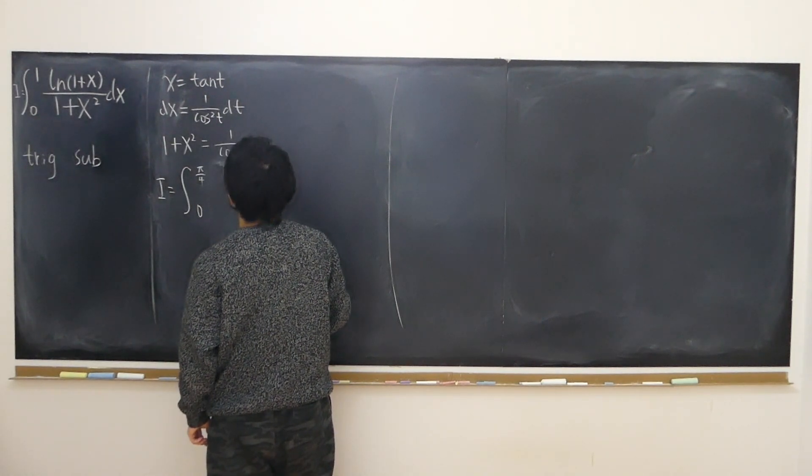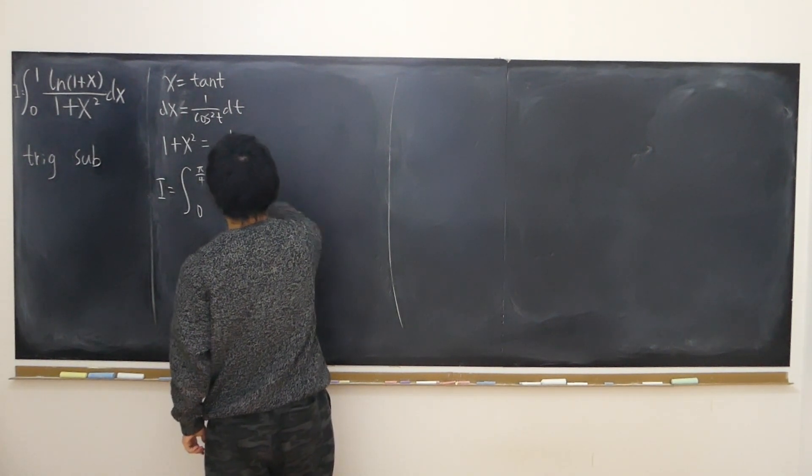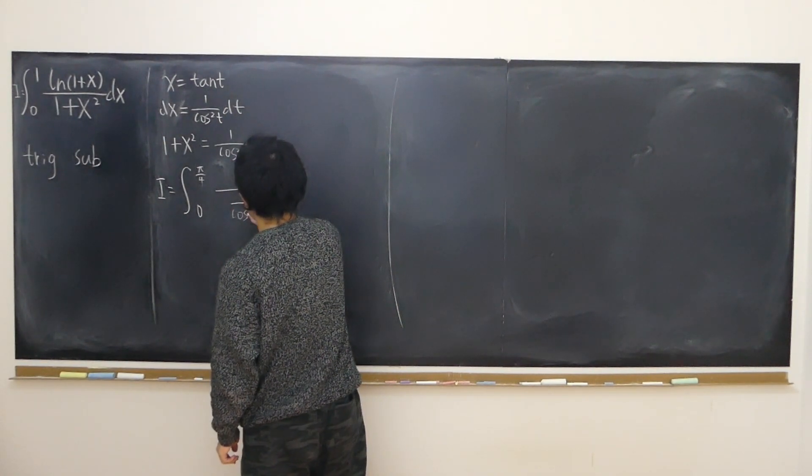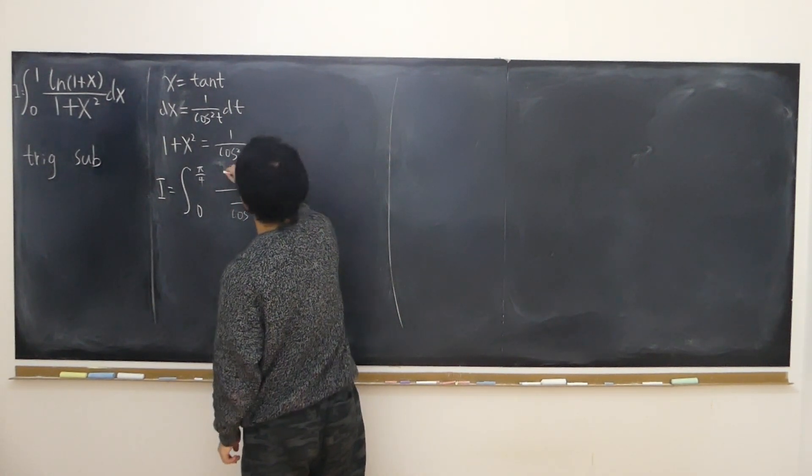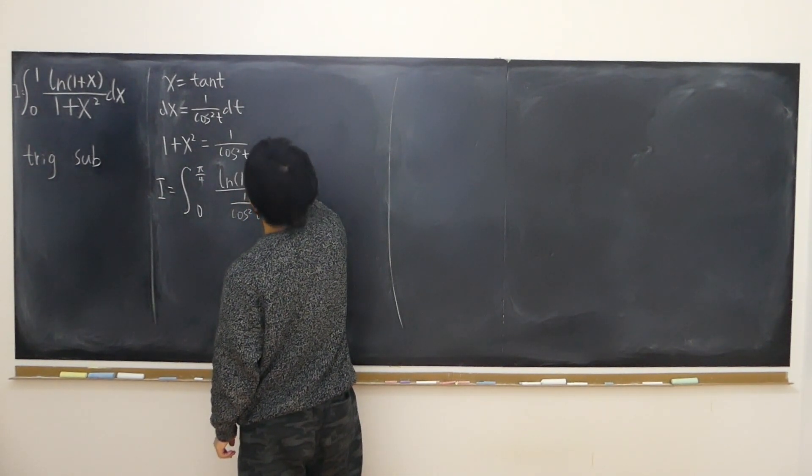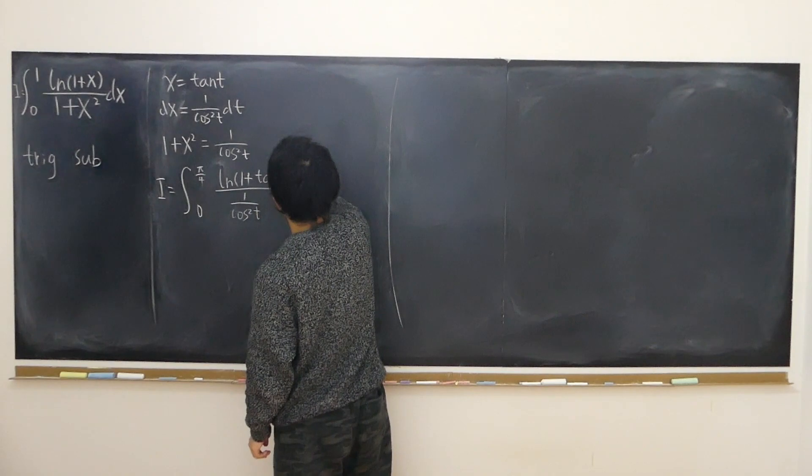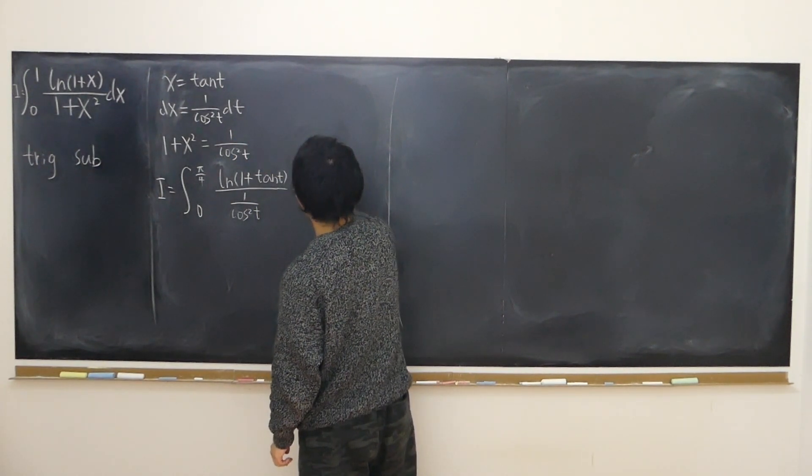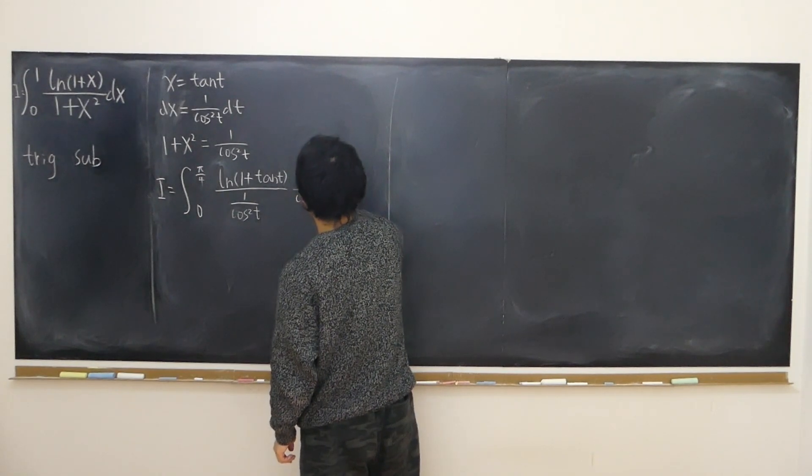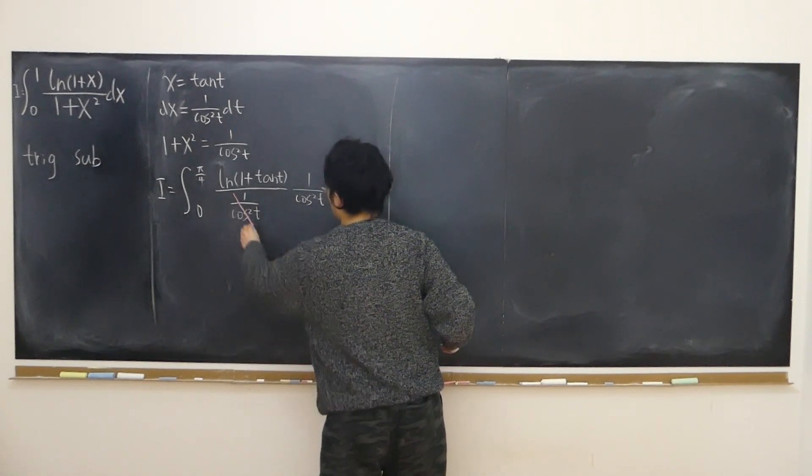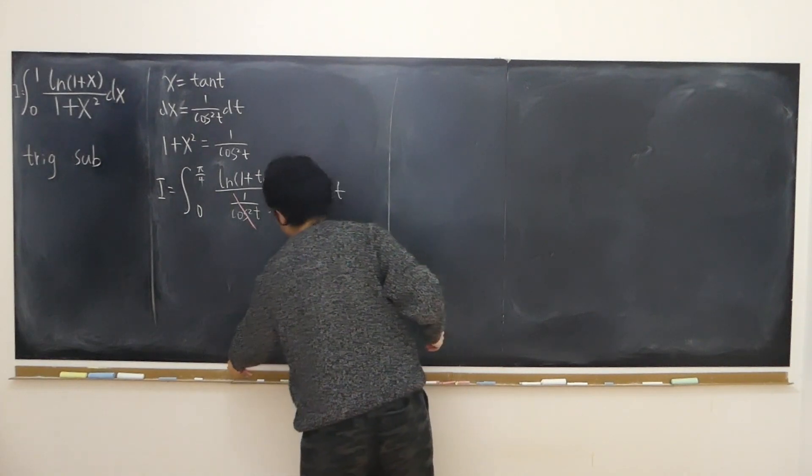And now it becomes, the bottom we have 1 over cosine squared t. At the top we have log of 1 plus x, x is tangent t, times dx, dx is 1 over cosine squared t dt. And now we can simply cancel out 1 over cosine squared.